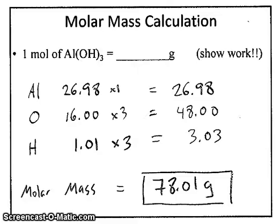So here's that molar mass calculation completed. We can see that the molar mass of aluminum hydroxide would work out to be 78.01 grams per mole.